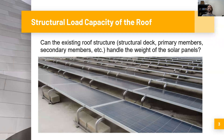When considering the addition of a solar panel array onto an existing roof, the first and most important thing to consider in most cases is whether or not the existing roof structure — that would be the structural components of the roof system, that would be the deck, the structural deck, the primary roof support members, such as your primary beams and columns, the secondary members such as the joists spanning between the primary members — whether or not that structure can handle the weight of a new solar panel system.